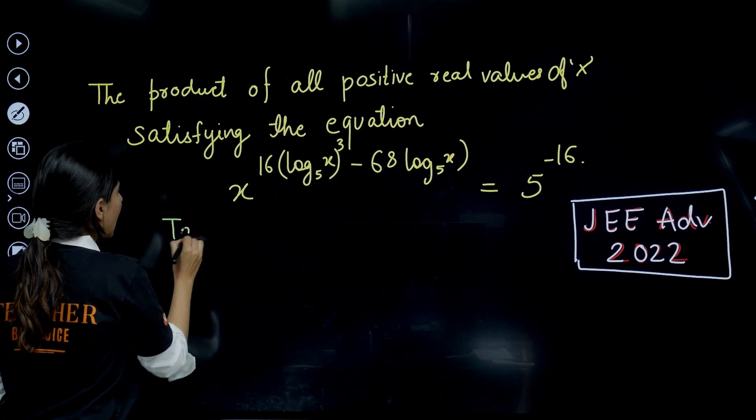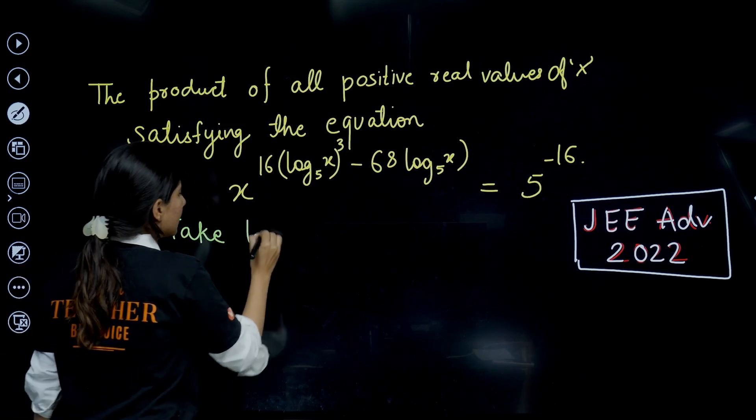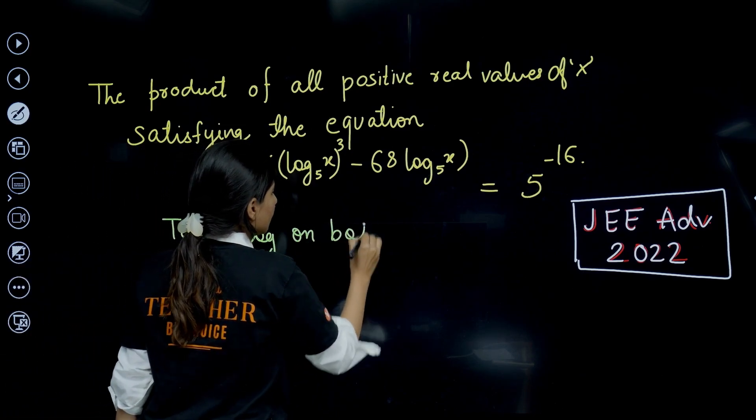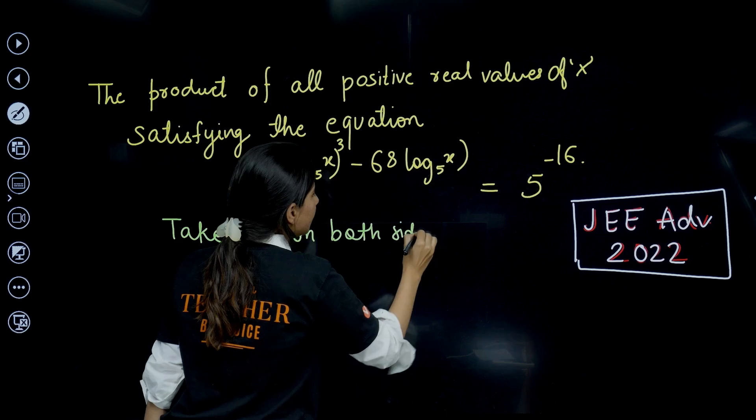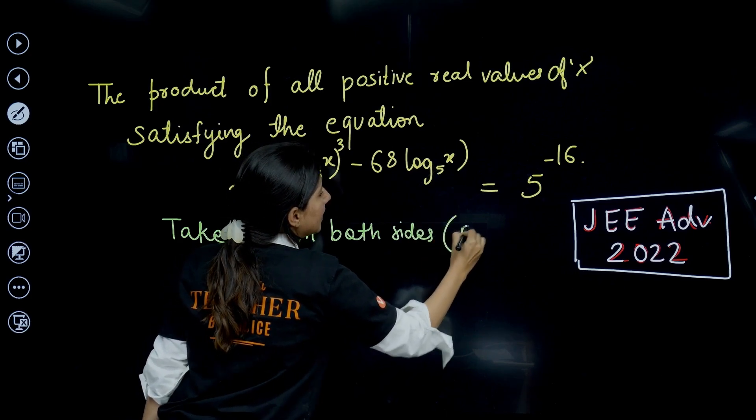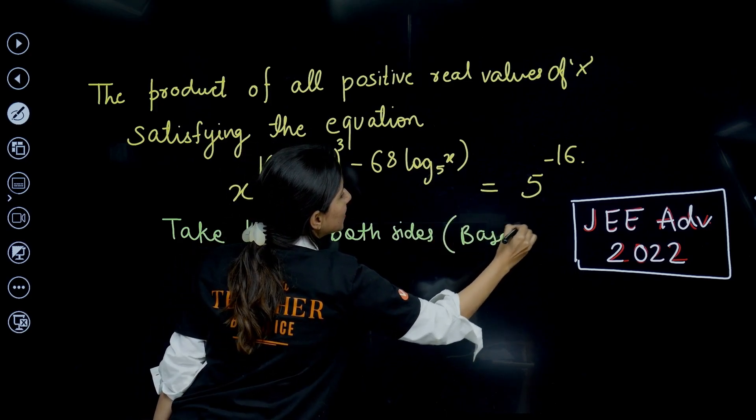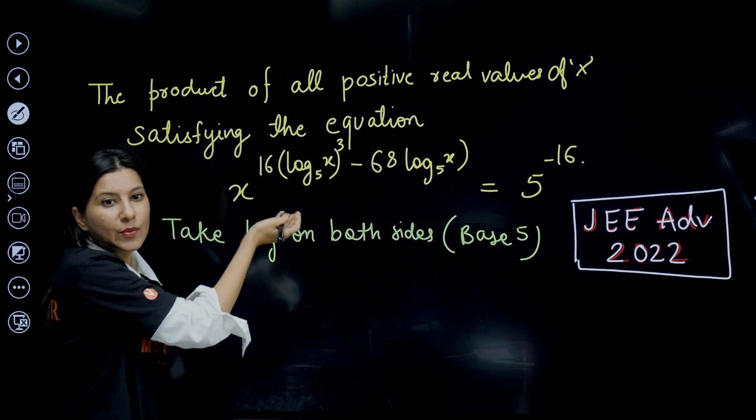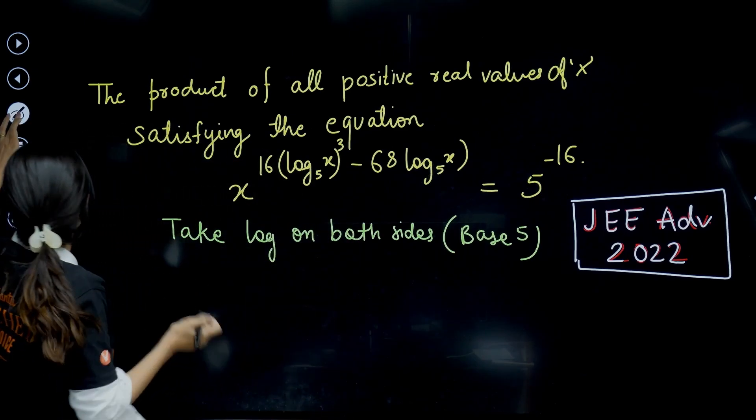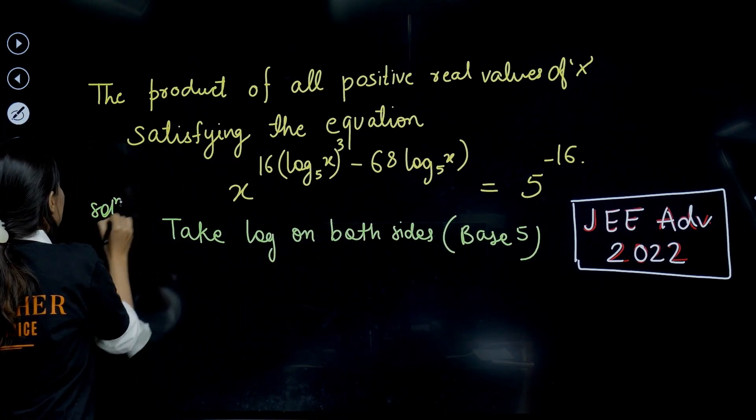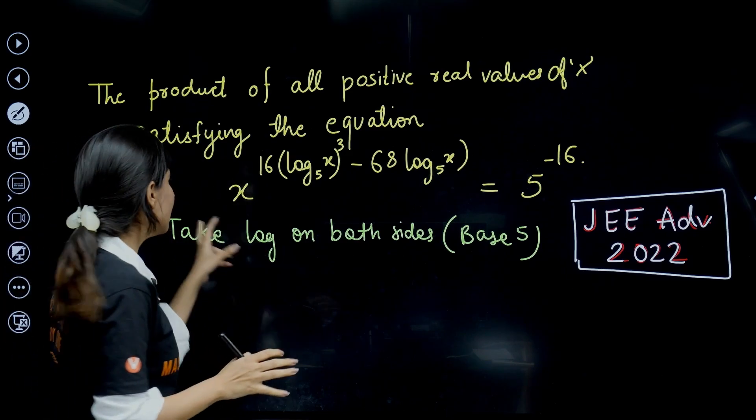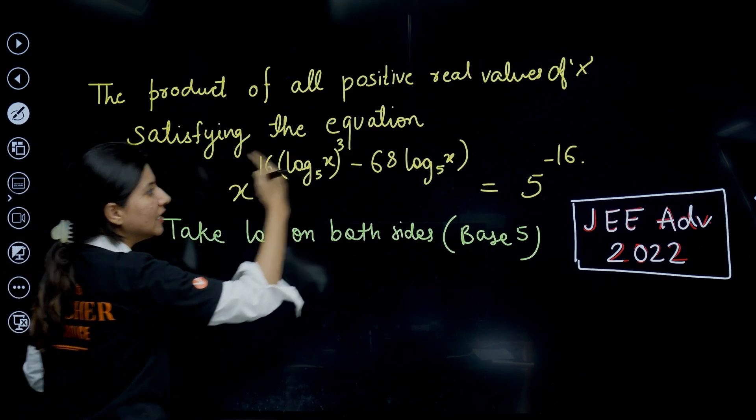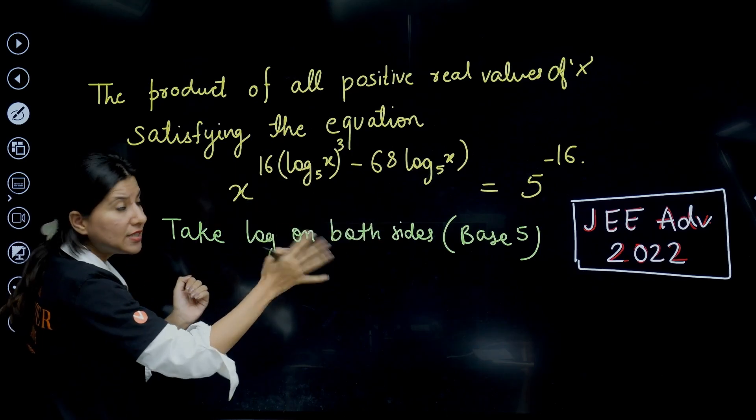What we are going to do is we are going to take logarithm on both sides. But when we take logarithm we have to fix the base as well. Clearly it is given in the question, the hint is already given in the question that you have to take base 5 of the logarithm.